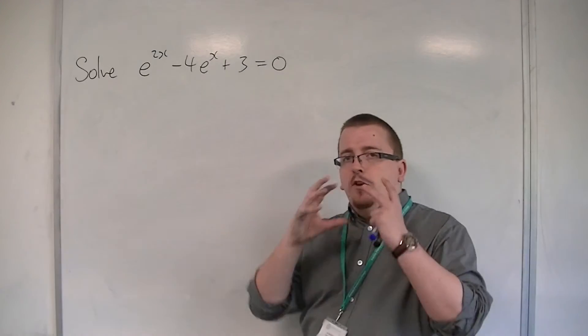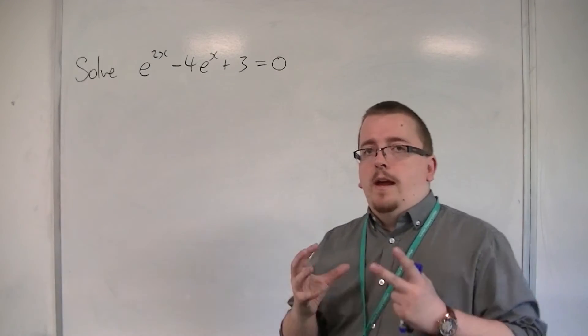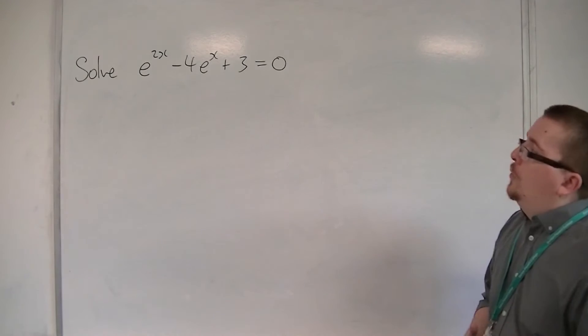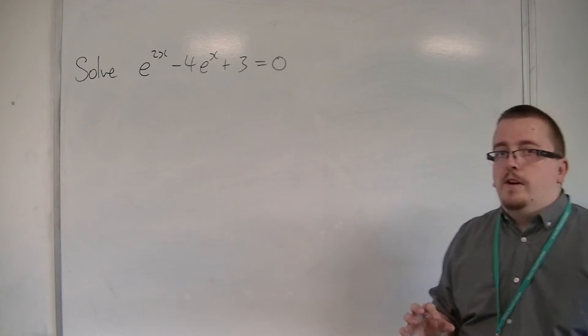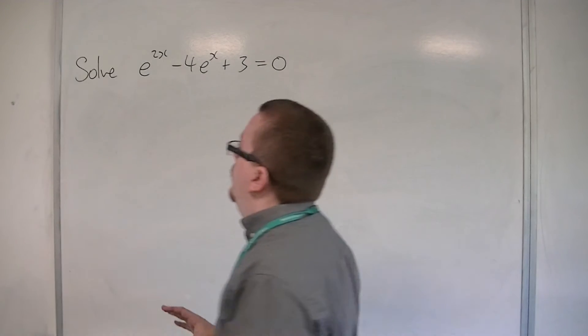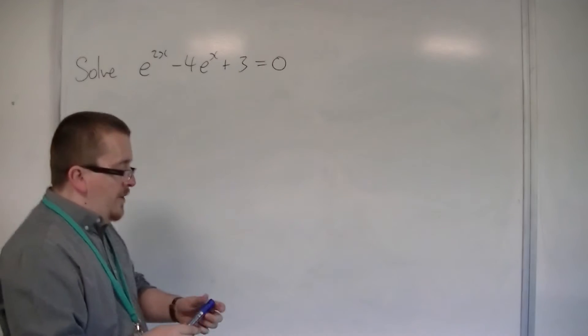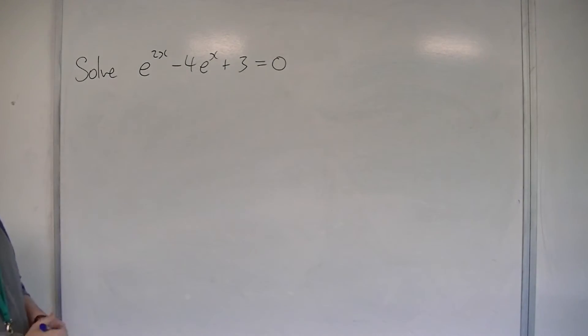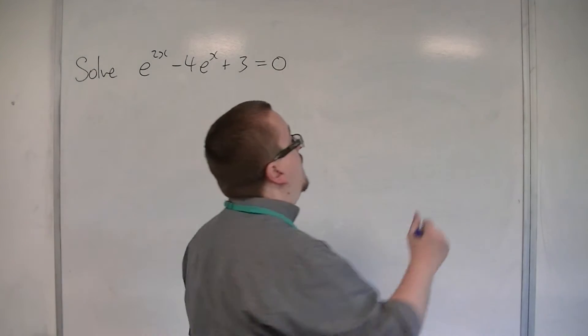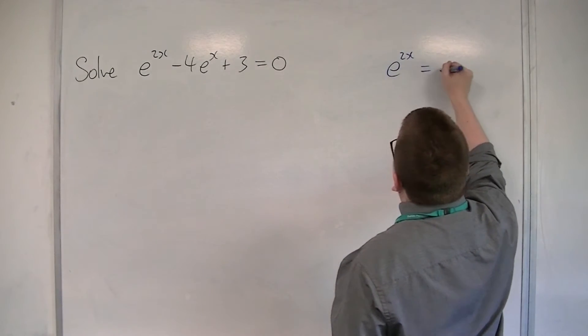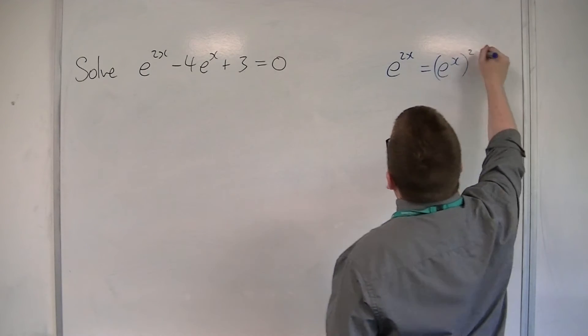Now, it's not going to be immediately apparent how we can solve this equation. However, you might spot it as being a quadratic. Now, it's not immediately obvious why it's a quadratic, but what you need to identify is that e to the 2x is the same as e to the x squared.